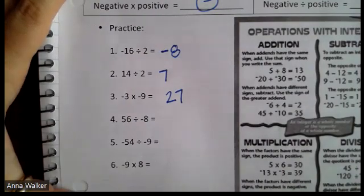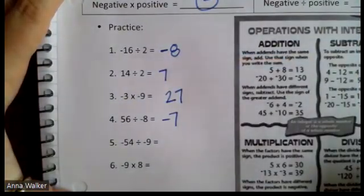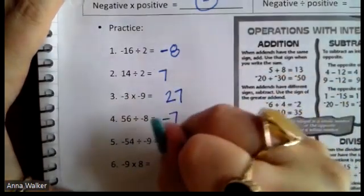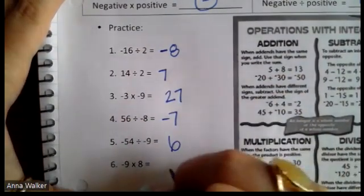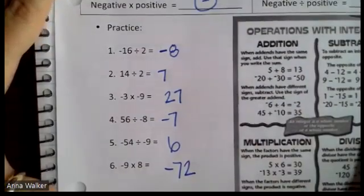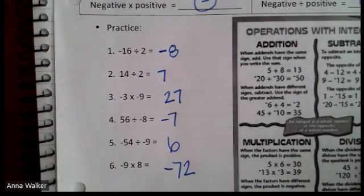Let's go over the answers. 56 divided by negative 8 should be negative 7. Negative 54 divided by negative 9 should be positive 6. And negative 9 times 8 should be negative 72. So again, the actual math of multiplying and dividing doesn't change — what changes is whether our answers are positive or negative based on the rules.